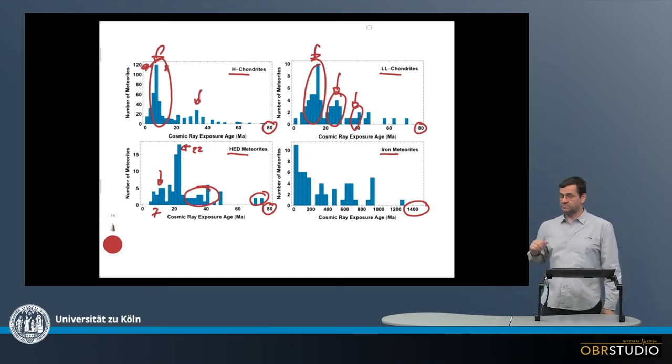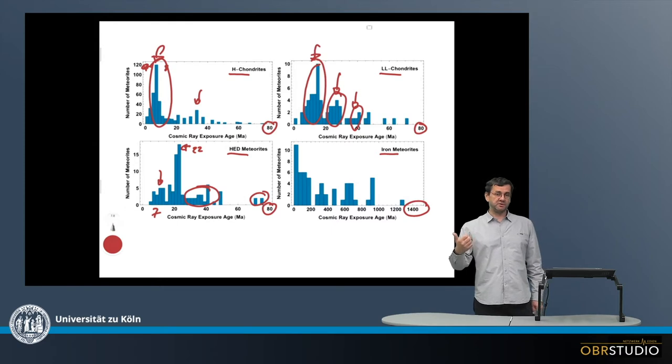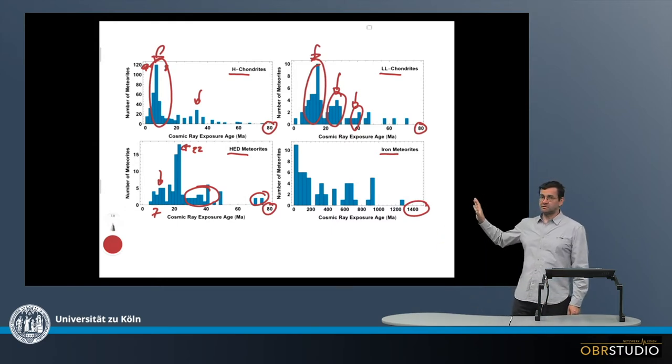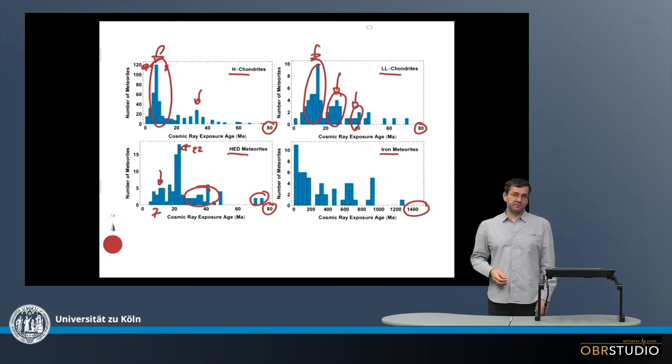And this is what we can learn from these cosmic ray exposure ages. So, space weathering affected stone meteorites more than iron meteorites. And many meteorites might come actually from the same parent body, and not that if you have many meteorites of one group, it means there must be lots of this parent body. So, this is what we learn from these.